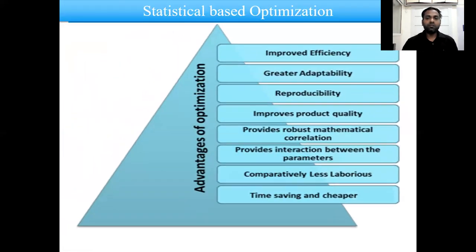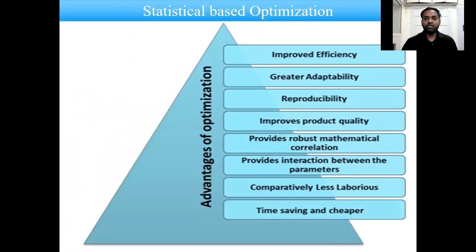Then you maximize your production by generating 3D surface plots or contour plots. At the next level, you generate an equation which can be used to predict the output of your reactor as a function of your process parameters. Optimization improves processing efficiency, improves the adaptability of the process, improves the reproducibility of product quality, provides robust mathematical correlation, and provides the interaction between the parameters.